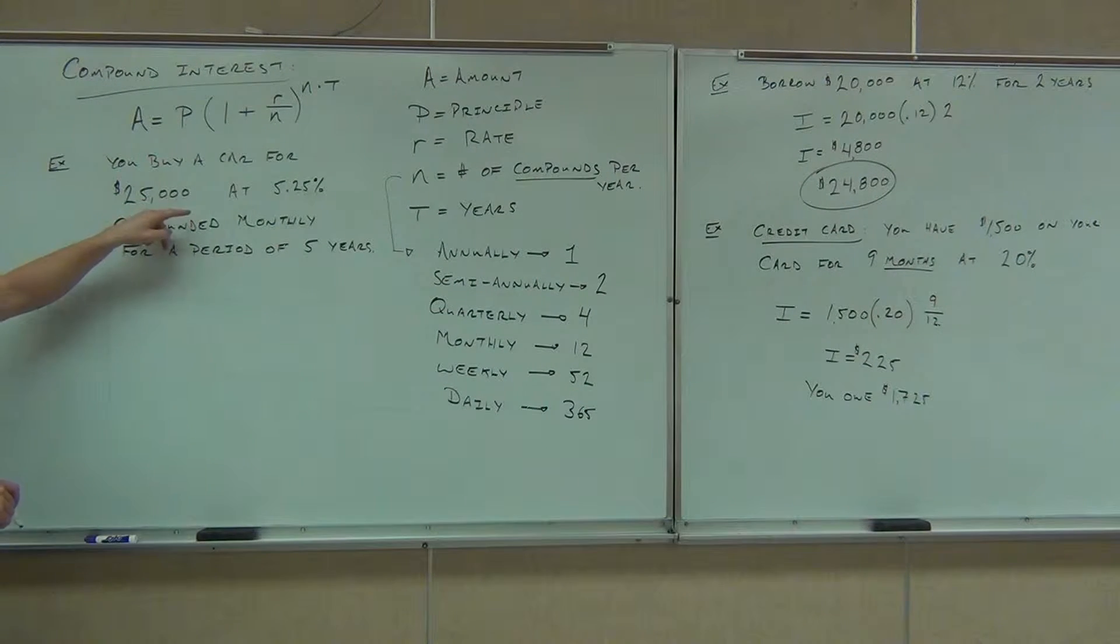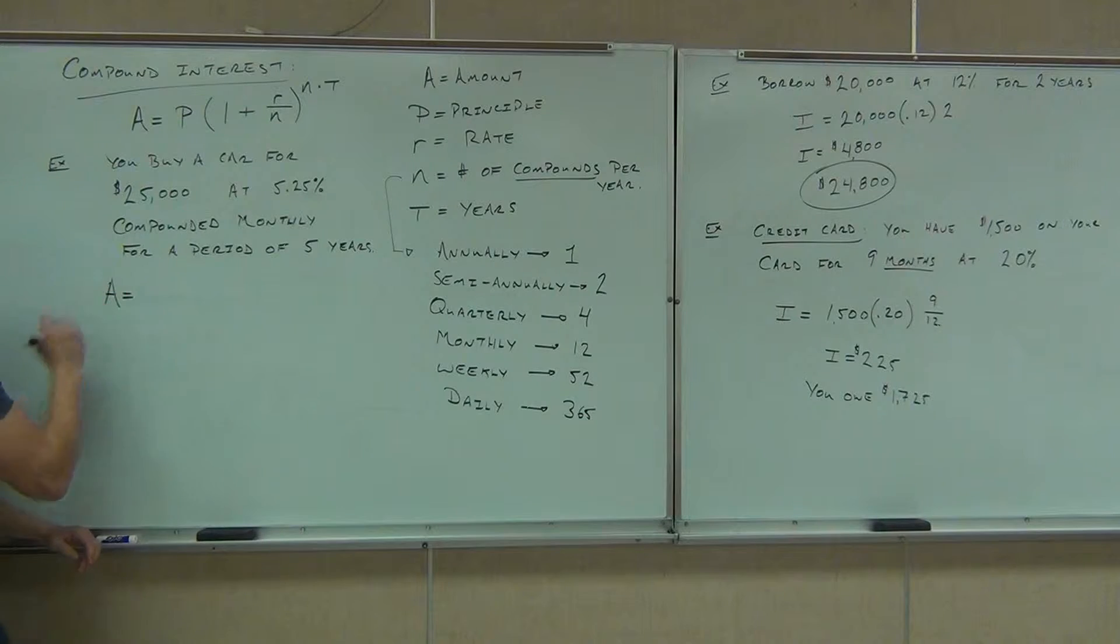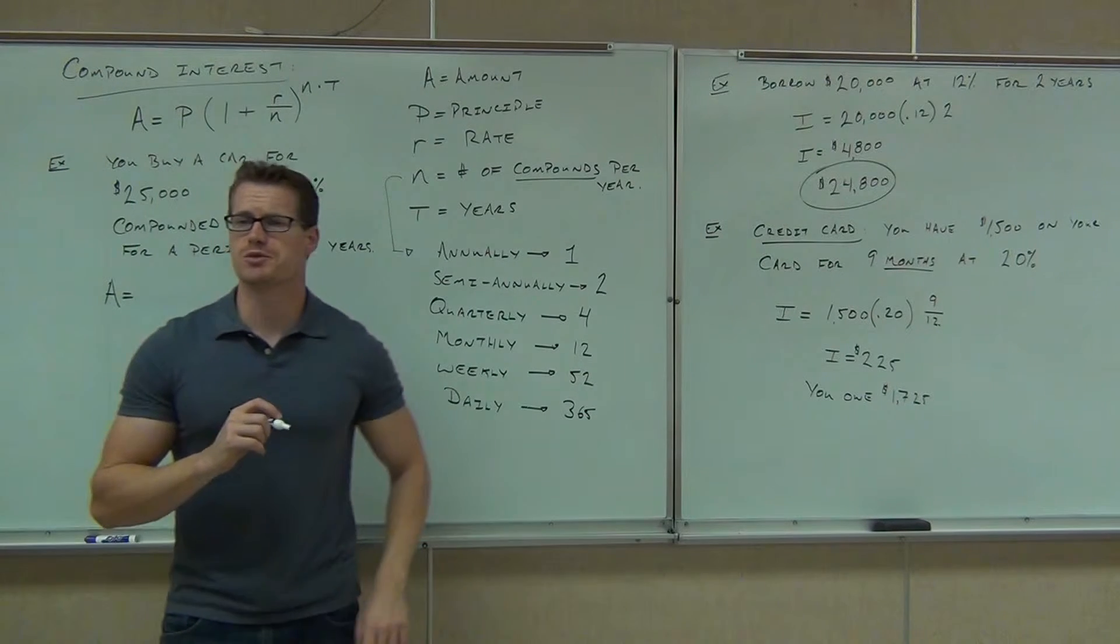So you buy a car for $25,000, 5.25% compounded monthly for a period of five years. We need to identify every one of these letters. So A is what we're looking to find. Can you tell me what your P is? What's your principal here?